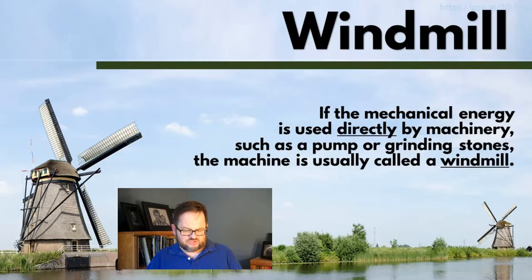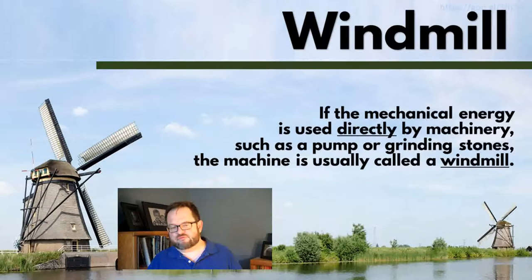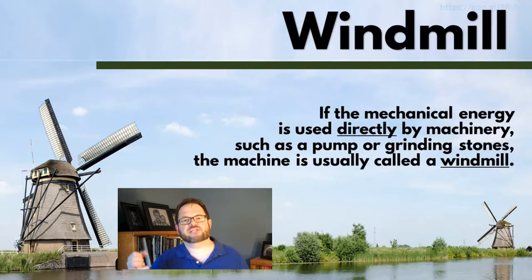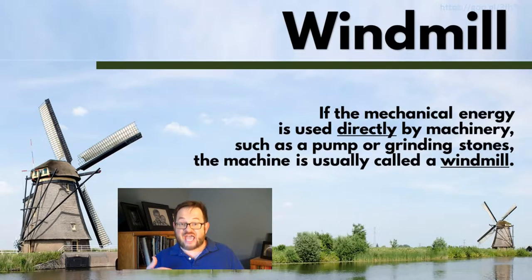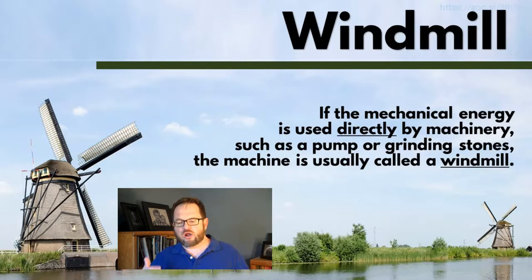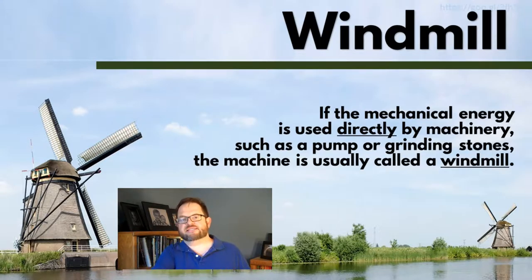Like these windmills here in the background on this slide — this is Holland, or the Netherlands, one of the low countries in Western Europe, located in the delta of the Rhine River. Much of that country is below sea level, and it was very slowly reclaimed over centuries from the sea, where an area would be drained using these kinds of windmills to pump water over a dike.